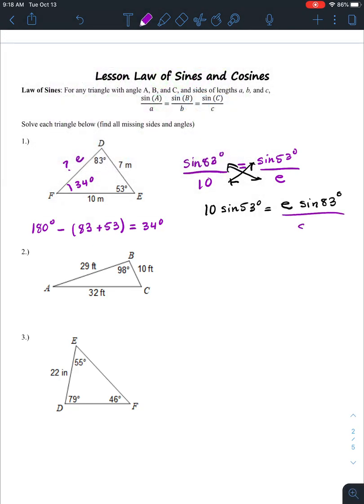So here you want to get E by itself. So all you do is you divide by sine of 83 degrees. And you get E equals 10 sine of 53 degrees over sine of 83 degrees. And you will get 8.046 meters as your answer. So I can go here and just write that number. And you have successfully solved the triangle because when we're solving, we're finding all the missing angles and the missing sides.